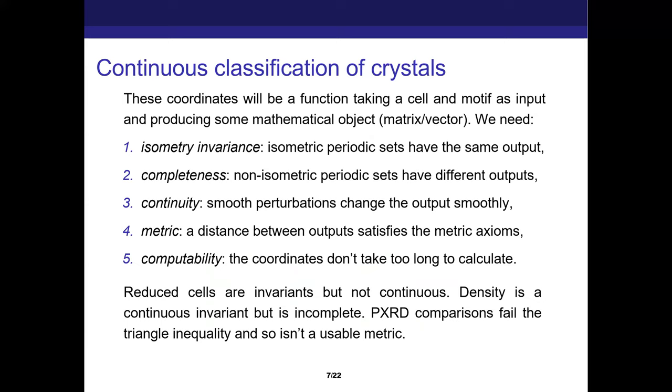This is one of the points that we require from what we call a sensible invariant or descriptor. What we want at the end of the day is a function that takes in a crystal and outputs a mathematical object - a matrix or vector. And what we want from it are these five things. Isometry invariance means if two crystals that we put in are equivalent, they're guaranteed to have the same output in our function. Anything that doesn't follow this doesn't make much sense.